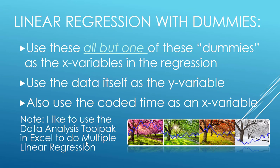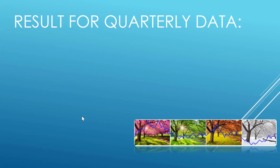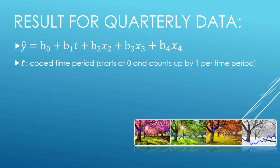If we have quarterly data, here is what our resulting equation is going to look like. That t, that first one, is our coded time period. It's going to start at zero and we're going to count up by one.